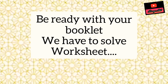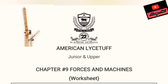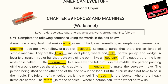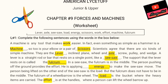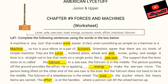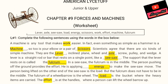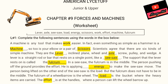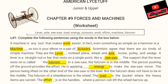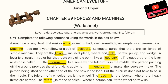Now be ready with your booklets — we have to solve the worksheet. Take out your booklets and be ready with your pencil. Question number one is fill in the blanks. A machine is any tool that makes work easier. In fact, even something as simple as a hammer is a machine, and so is a pair of scissors. Scientists agree that there are six kinds of simple machines: the lever, inclined plane, wheel and axle, screw, pulley, and wedge.